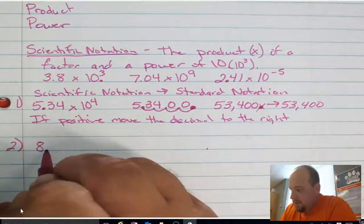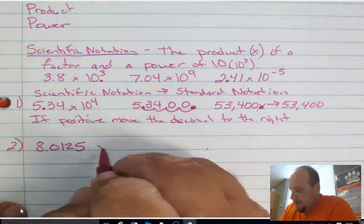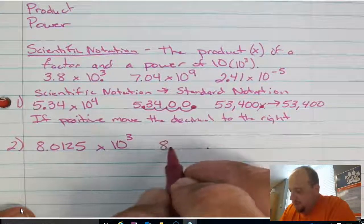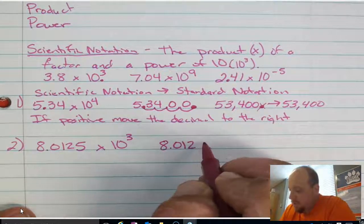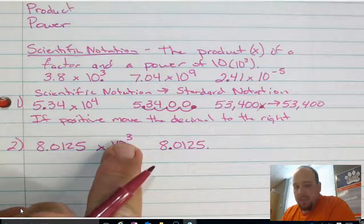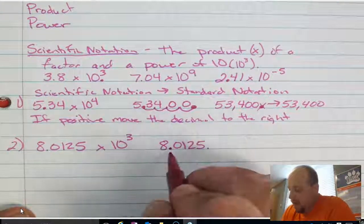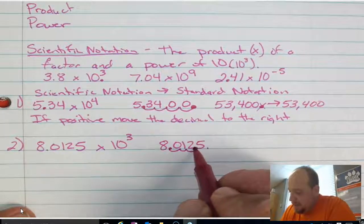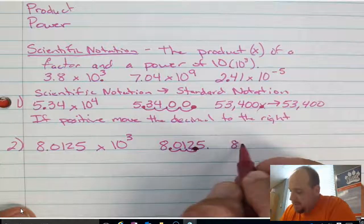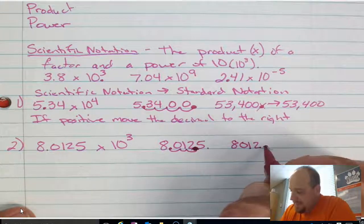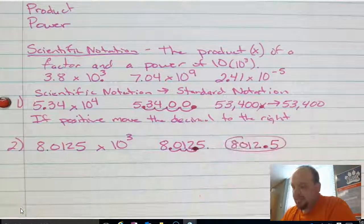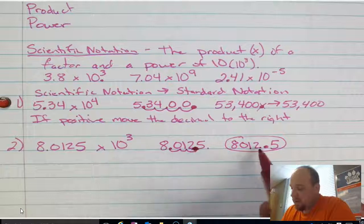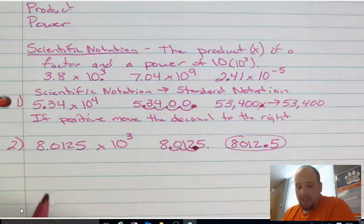Example number two: 8.0125 times 10 to the third power. I rewrite this factor — 8.0125 — and look at what the exponent is telling me. It's a positive 3, so I move the decimal to the right: 1, 2, 3 spots. Now my decimal ends up right here, and I rewrite this as 8,012.5. Notice how I moved the decimal from between the 8 and the 0 to between the 2 and the 5, because of that power of 10.